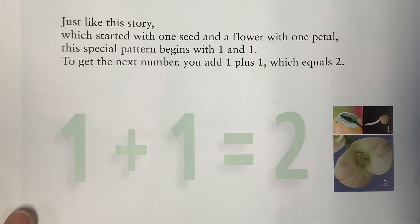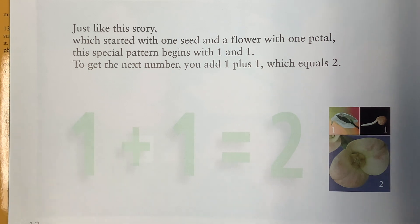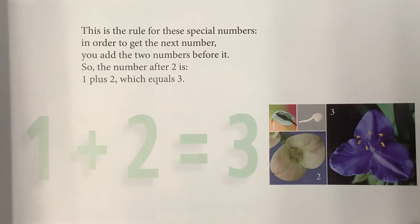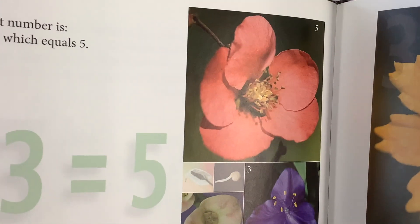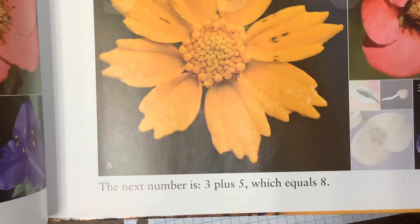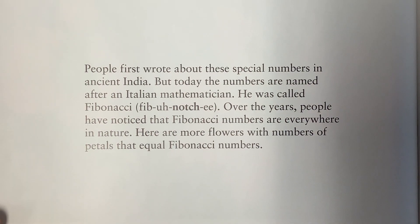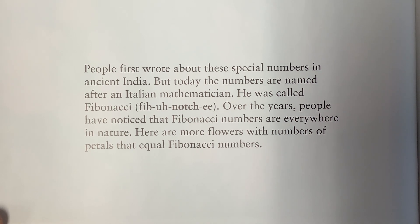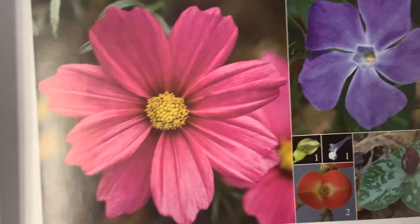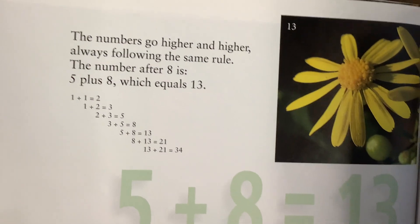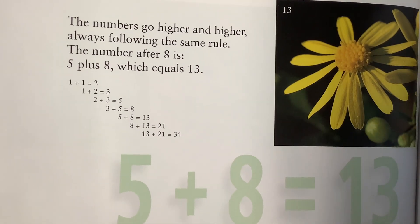Just like this story, which started with one seed and a flower with one petal, this pattern begins with a one and a one. To get to the next number, you add one plus one, which equals two. This is the rule for these special numbers - to get to the next number you add the two numbers before it. So the number after two is one plus two, which is three. Then two plus three, which is five. Then three plus five, which is eight. People first wrote about these special numbers in ancient India, but today the numbers are named after an Italian mathematician called Fibonacci. The Fibonacci numbers go higher and higher, always following the same rule.